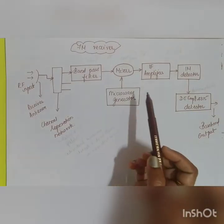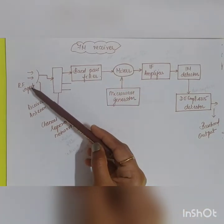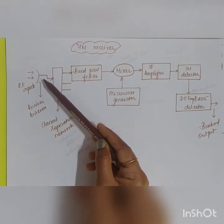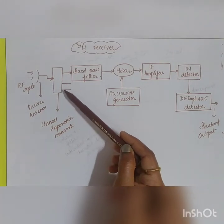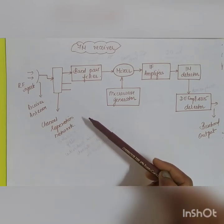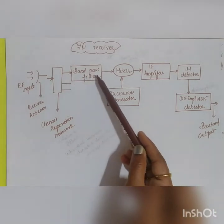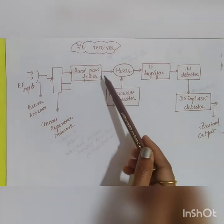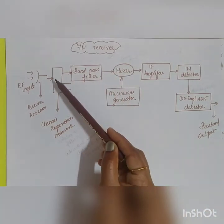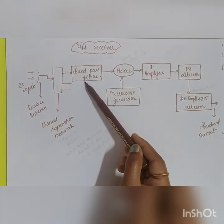The transmitted signal reaches the FM receiver. The RF output is received by the receiving antenna and given to a channel separator network, which separates and isolates individual microwave channels, directing them to their respective receivers. The next stage is a bandpass filter followed by a mixer — the opposite of the transmitter side. Here, the mixer acts as a down-converter, converting the RF signal into an IF signal.